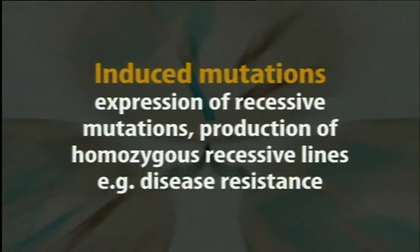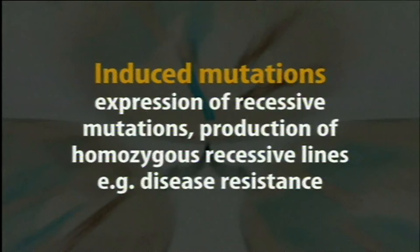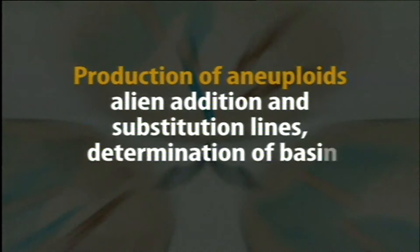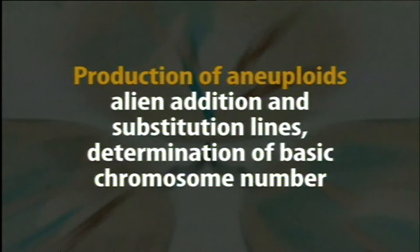Generally mutations are recessive in nature and do not express in the first generation because dominant counterparts suppress their expression. But when a plant is haploid, any induced mutation is expressed immediately in the first generation. In this way, we are able to detect such recessive mutations, and the plant is then made homozygous diploid for releasing as new crop varieties.